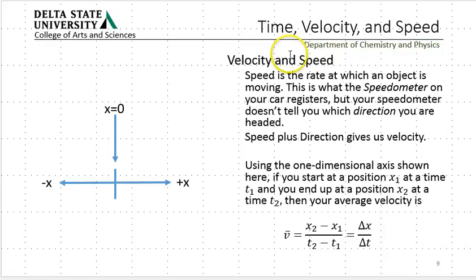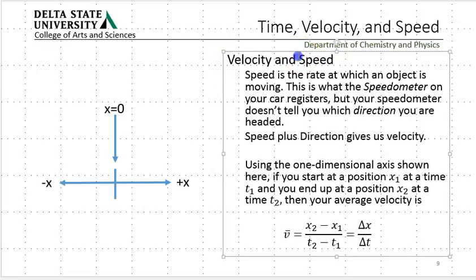So, velocity is speed plus direction. Velocity is a vector. Speed is a scalar.